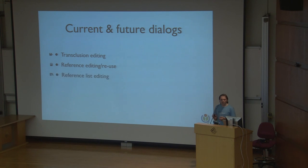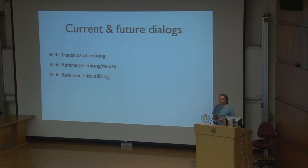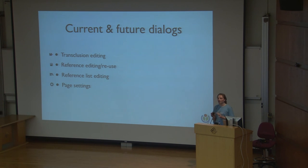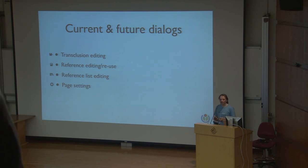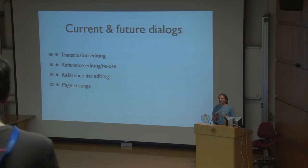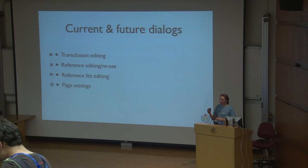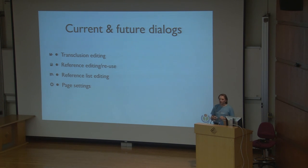For references, we've implemented a feature for the citation extension where references have a certain name and can be reused. Previously that was a little buggy but now works as expected. References list — there can be more than one list in an article. For page settings, this is anything that's not rendered directly in the article but is part of the wiki text: categories, default sort keys, language links, things like that. We extract those out of the visual representation and give you a dedicated dialogue to edit them. Thanks to Parsoid and partial serialization, those will remain in the same part of the document unless you actually change them.